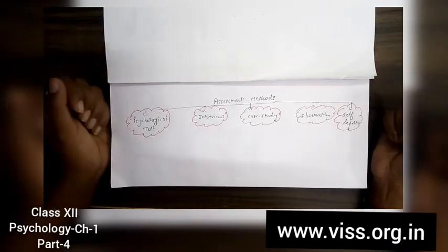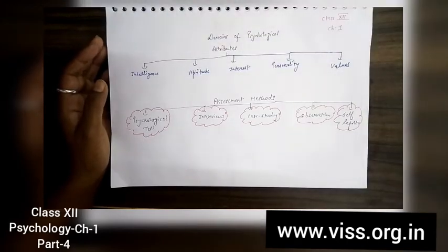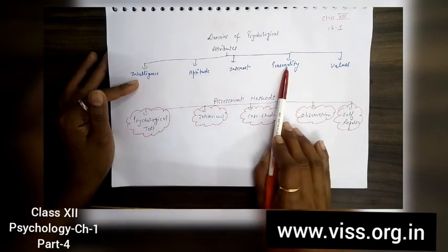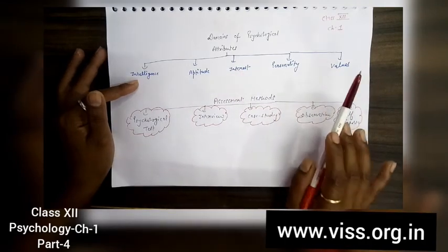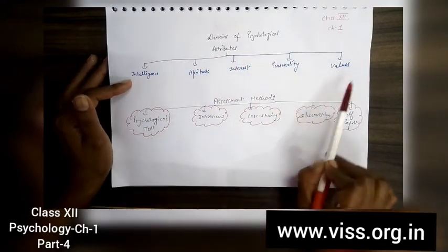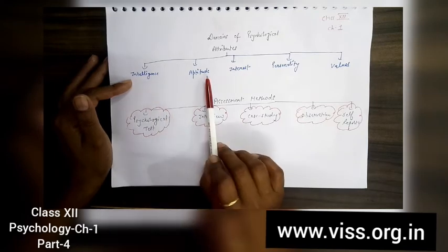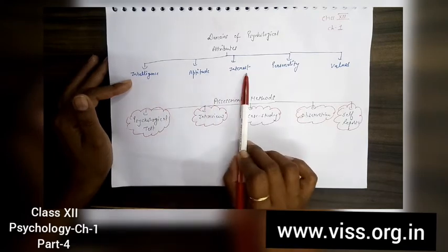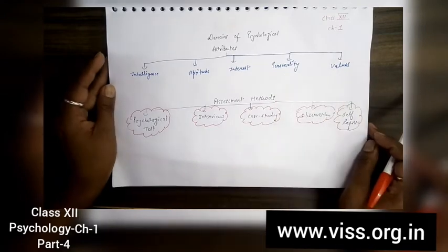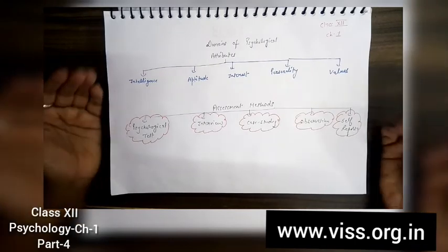You have learned about the previous things: domains of psychological attributes - intelligence, aptitude, interest, personality, and values. Now the question is, how will we see all of these in any person? How will we understand how intelligent they are, how is their aptitude, how is their interest, what is their personality, and what are their values? For all of this, we need to see some methods.